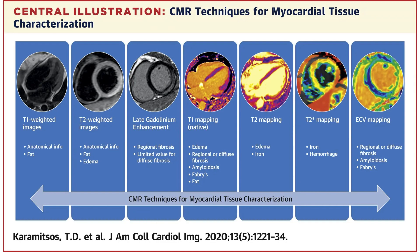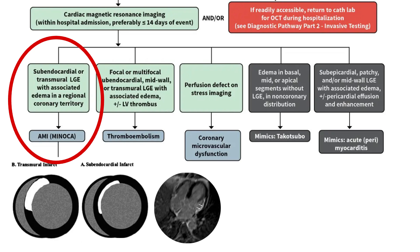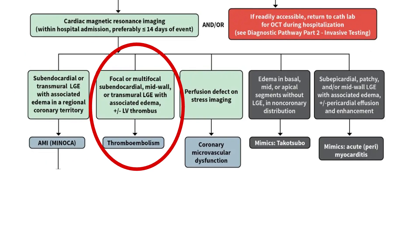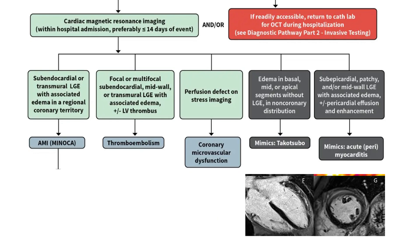Cardiac MRI plays a central role in MINOCA diagnosis. It provides high-resolution imaging and allows visualization of subtle wall motion abnormalities. Its tissue characterization is superb, allowing differentiation of acute MI from myocarditis, relying on late gadolinium enhancement and detection of myocardial edema. Late gadolinium enhancement detects as little as one gram of infarcted myocardium. A subendocardial or transmural pattern suggests ischemia, multifocal enhancement suggests coronary emboli, and subepicardial enhancement suggests non-ischemic injury. Edema with late gadolinium enhancement confirms myocarditis; edema without it suggests coronary spasm or Takotsubo cardiomyopathy.